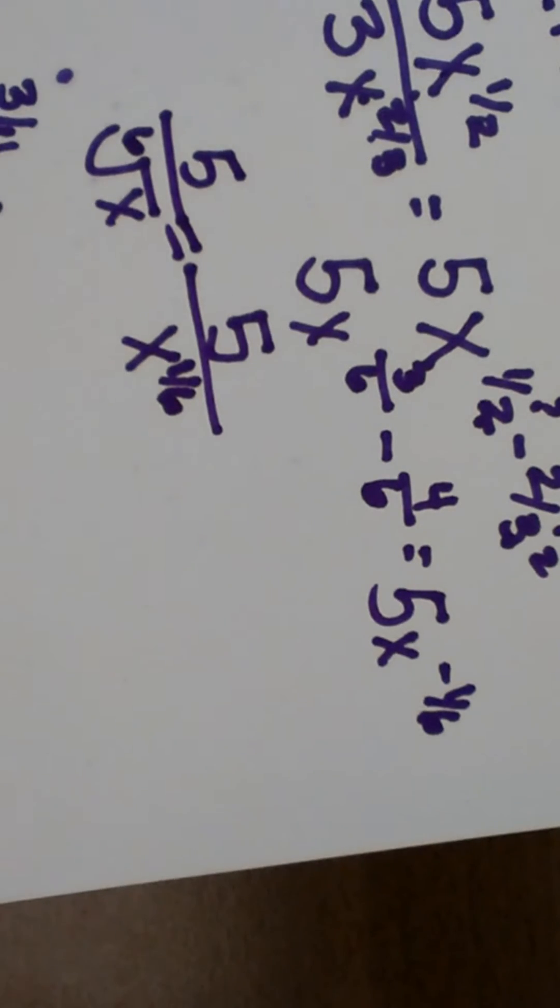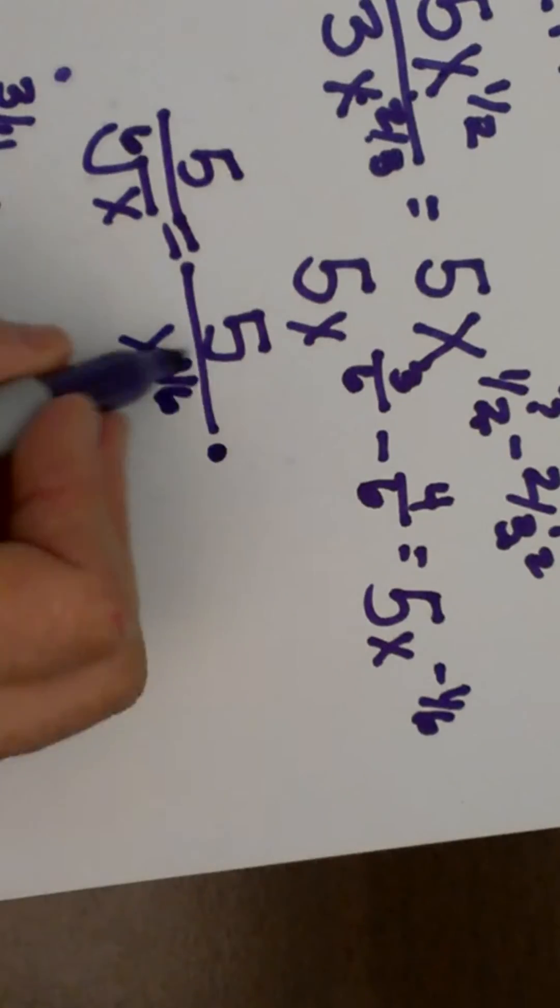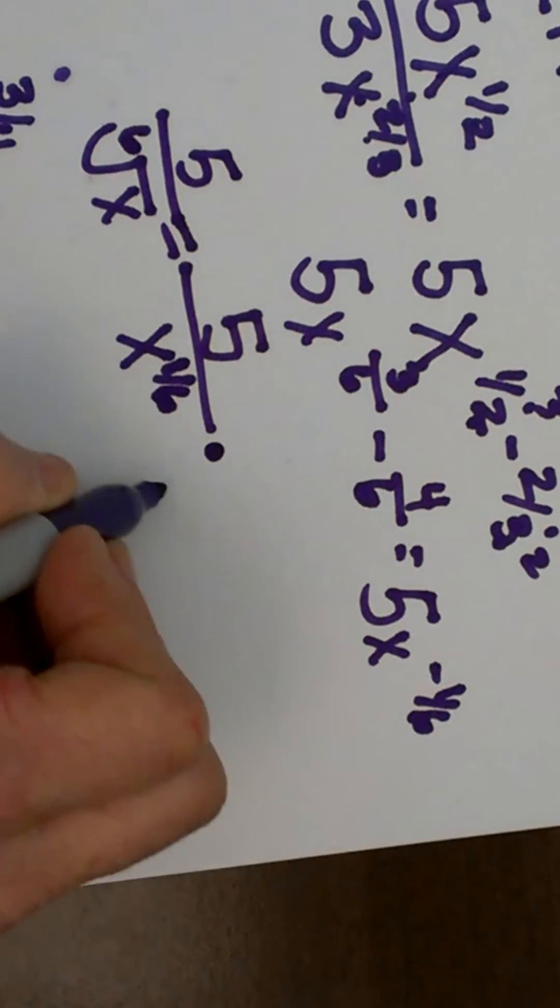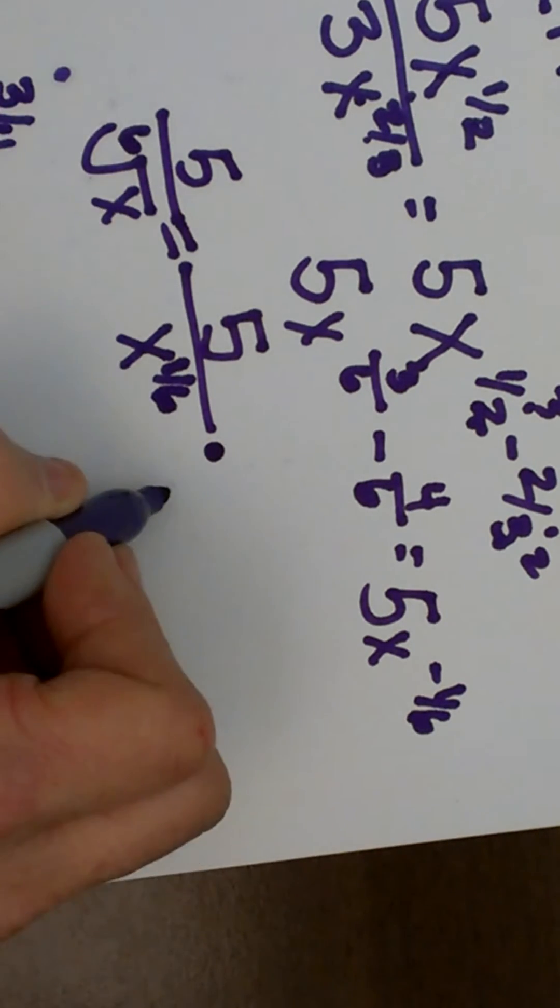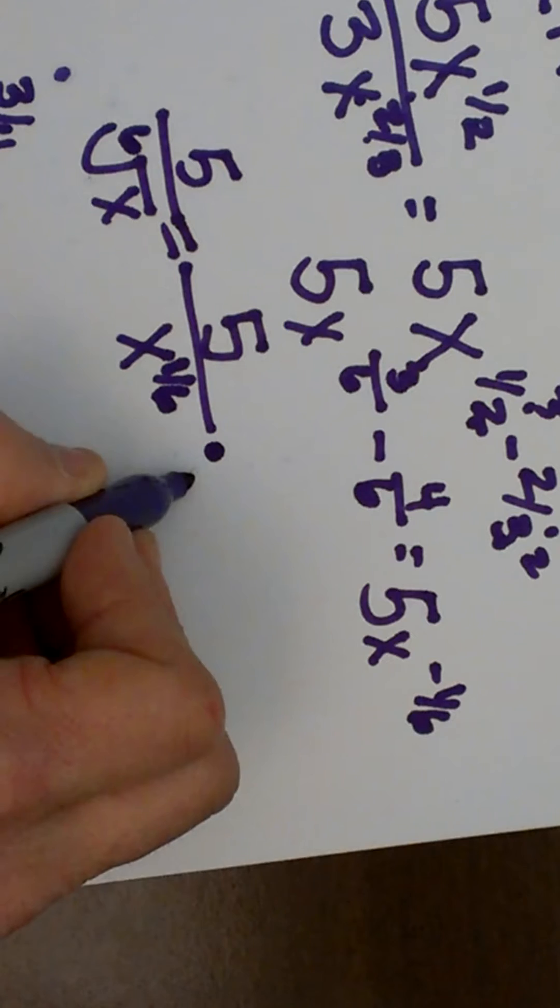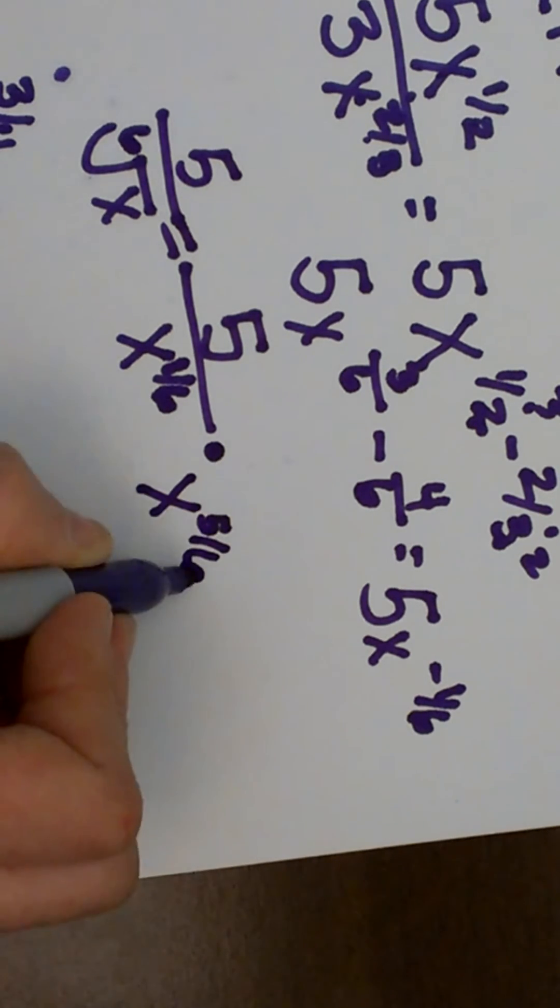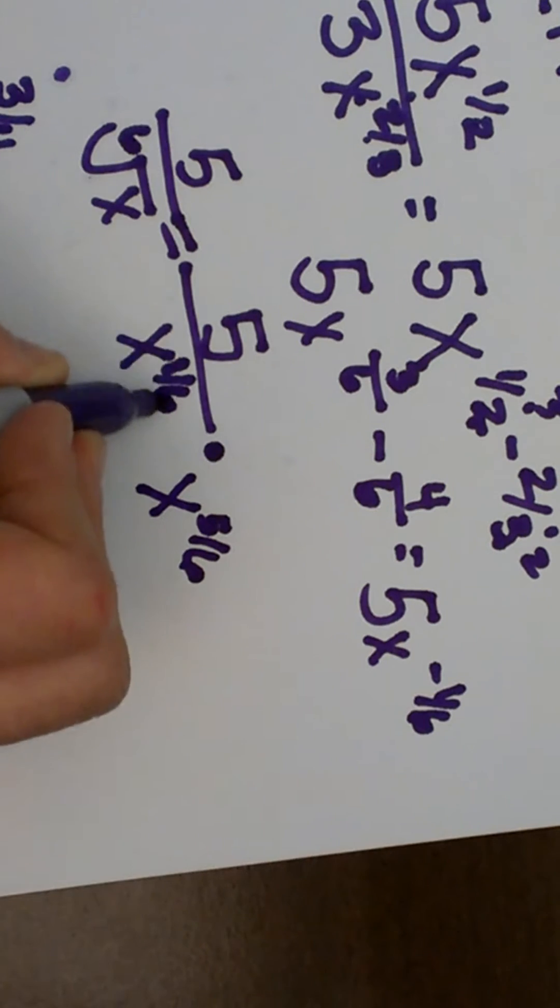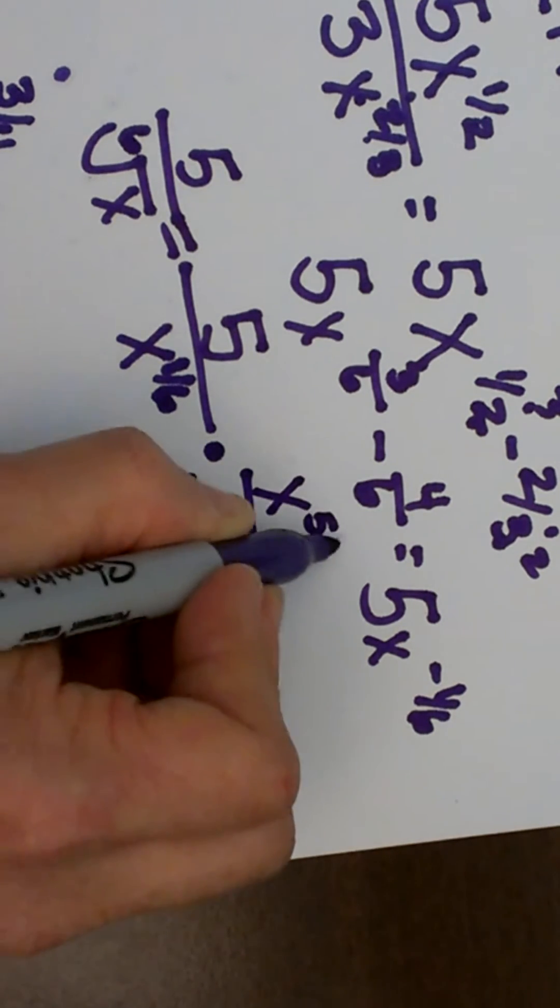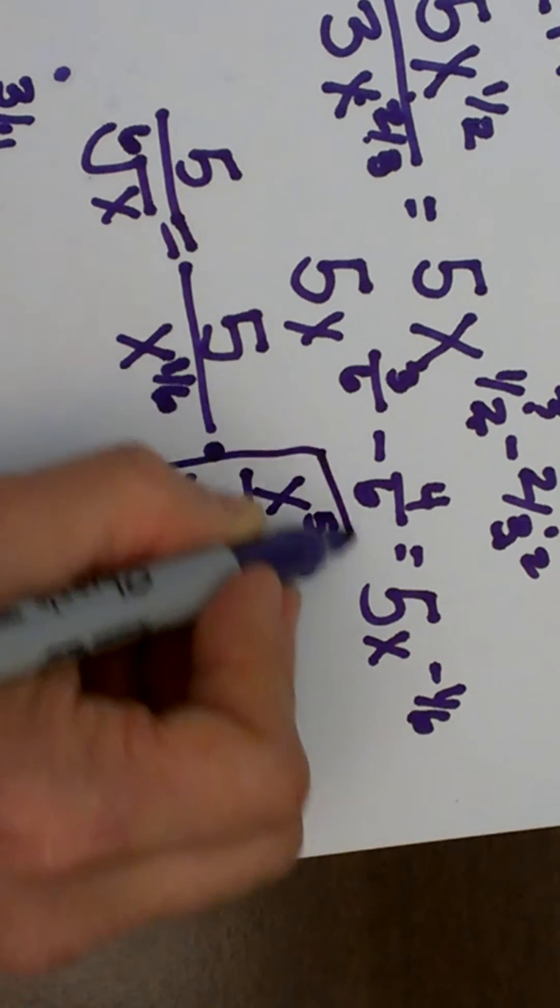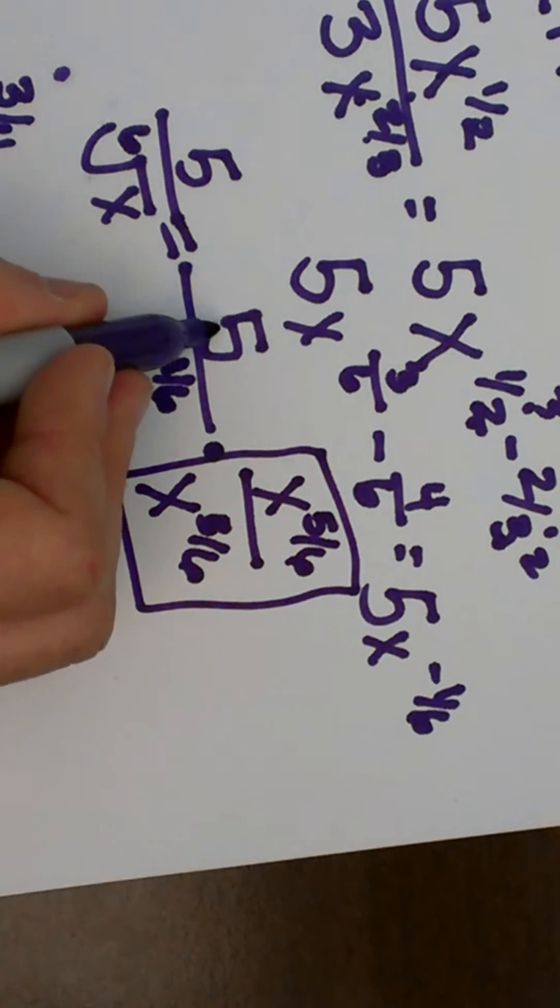And we cannot have radicals in the denominator, so we need to clean this up. We need 5 more x's to get it out of the 6th root, because a 6th root means you have 6 of them. So I am going to multiply this by x to the 5/6 over x to the 5/6, because really I am just multiplying by a value of 1.